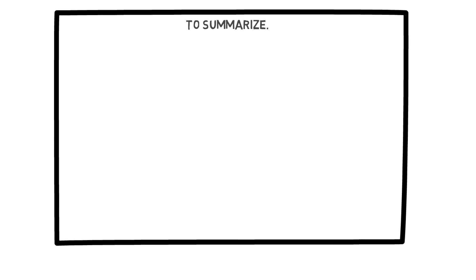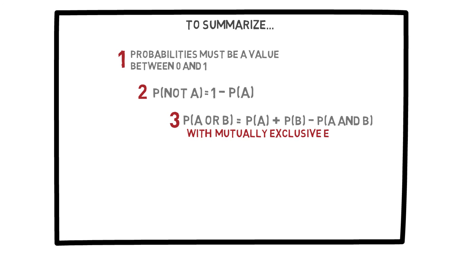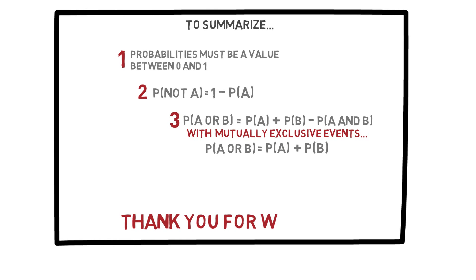In this video, I have discussed three rules of probability. We will see how to use these rules as we go through practical examples throughout the course. To summarize, these are the rules: 1. Probabilities must be a value between 0 and 1. 2. The probability of not A is 1 minus the probability of A. 3. The probability of A or B is the probability of A plus the probability of B minus the probability of A and B. Or, in the case of mutually exclusive or disjoint events, the probability of A and B is zero, so the probability of A or B is simply the probability of A plus the probability of B. Thank you for watching.